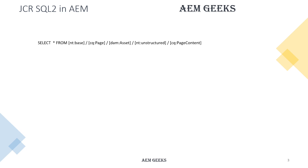In SQL2, you use the SELECT statement: SELECT * FROM, and then you must mention from what you need to select. If you add nt:base, that means you are selecting from every node in the JCR content repository. You can add any option here as per the primary type available in AEM — you can select from cq:Page, dam:Asset, nt:unstructured, cq:PageContent, or whatever primary type is available. In real scenarios, you will be searching through a specific path.